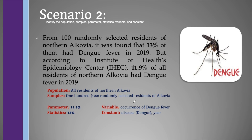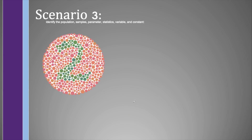Now let's proceed to scenario number 3, wherein we can see an Ishihara test, which measures whether a person is colorblind or not. If you can see the number 2 here, then you are not colorblind. But if you cannot see the number 2, then most probably you are a red-green colorblind.